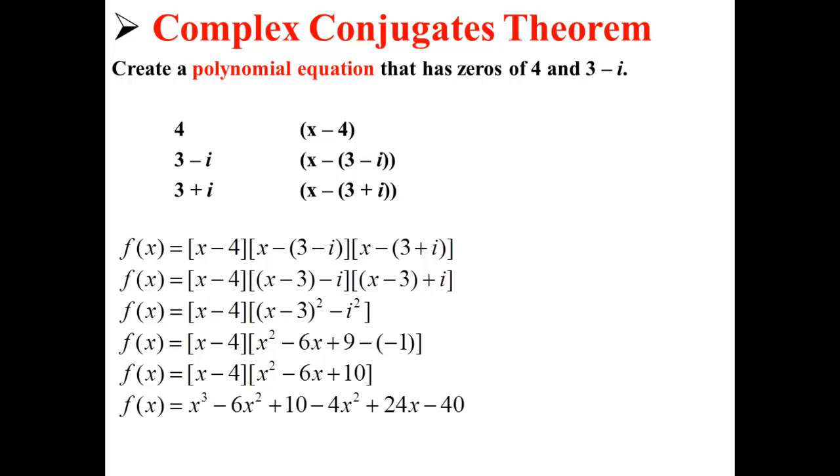And now we FOIL that out to get x to the third minus 6x squared plus 10x minus 4x squared plus 24x minus 40.